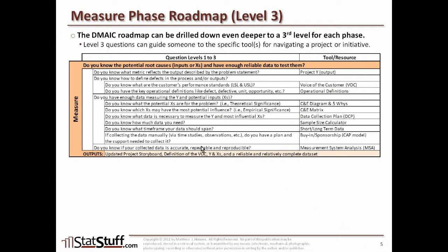At this point, when we're beginning the measure phase, we should have already been able to answer all the questions associated with the defined phase. If we have answered yes to all those, now we're ready to begin the measure phase, where we first ask ourselves at a high level: do you know the potential root causes — that is, the inputs or the x's — and do you have enough reliable data to test those root causes? If we cannot answer yes to that question, we dig down into the next layer. The first second-level question is: do you know what metric reflects the output described by the problem statement? If not, you want to explore defining the project Y, or the output, in order to answer that question.